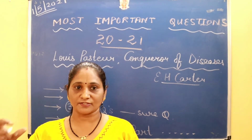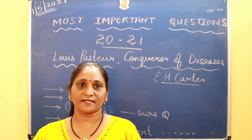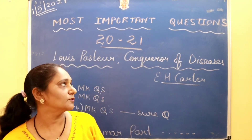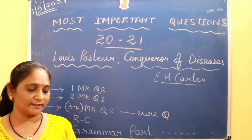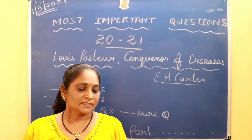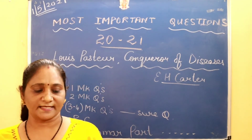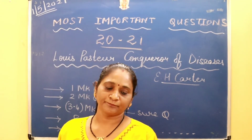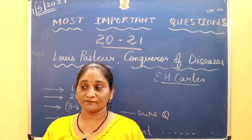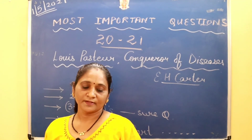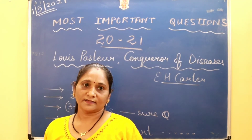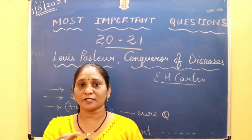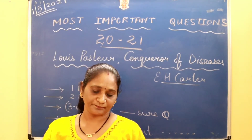For the reference to context: 'If you can cure animals, you can cure my son.' Write this in two paragraphs. First paragraph: this extract is taken from the lesson 'Louis Pasteur' written by E.H. Carter. Second paragraph: this was said by the mother of a young Alsatian boy. She tells Pasteur: if you can cure animals, you can cure my son — vaccinate him.